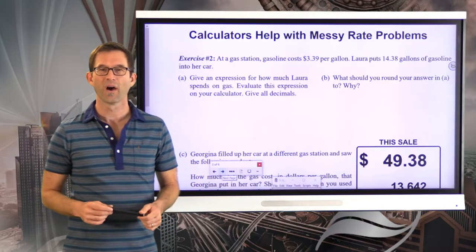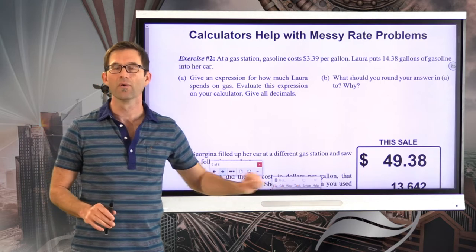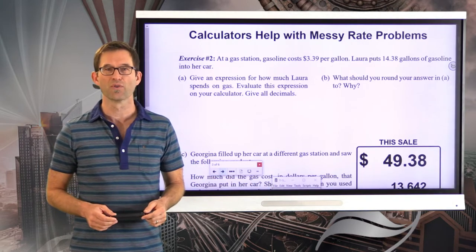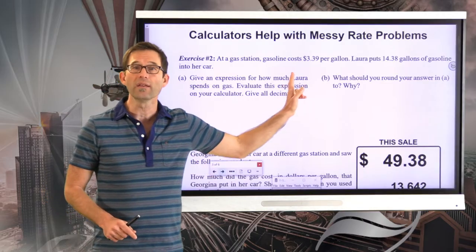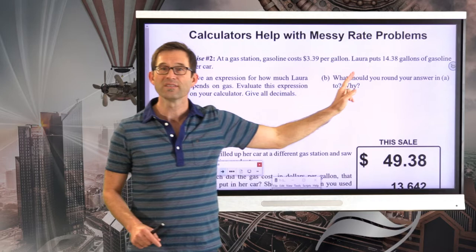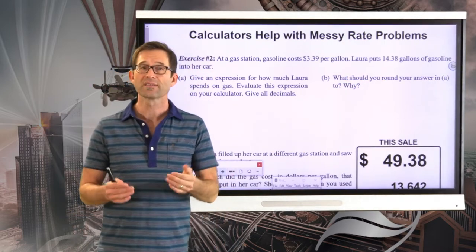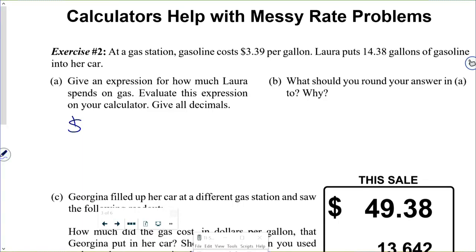Now we're into calculators with messy rate problems. Exercise number two: at a gas station, gasoline costs $3.39 per gallon. Laura puts 14.38 gallons of gasoline into her car. Give an expression for how much Laura spends on gas, then evaluate it on your calculator. Our expression is 3.39 dollars per gallon times 14.38 gallons.